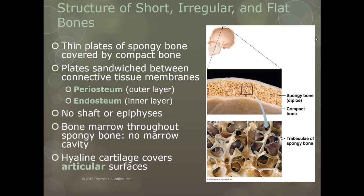When we look at short, irregular, and flat bones, we have no shaft, no diaphysis and epiphyses. Instead, essentially what we have is a bone sandwich — two plates of compact bone with spongy bone between them. Think of it as a sandwich: compact bone is your bread and spongy bone is whatever you want inside. We still have the periosteum and endosteum membranes, but we lack not only the shaft and epiphyses but also a marrow cavity. Instead, all of the spaces between the trabeculae of the spongy bone get filled typically with red marrow.